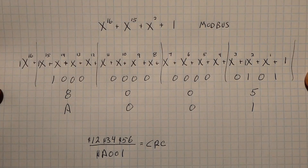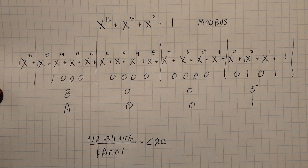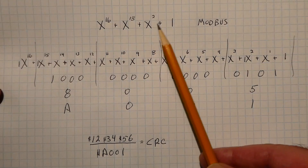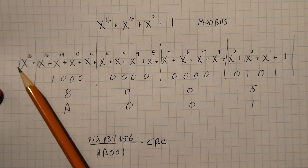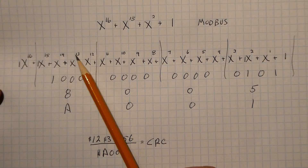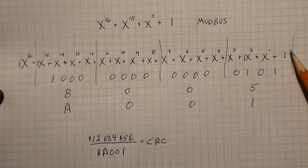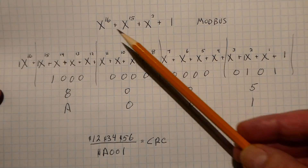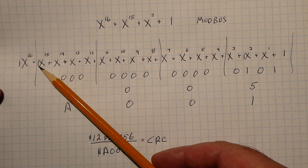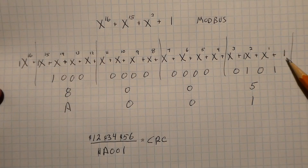I'd like to use the Modbus polynomial for my CRC check. It's a 16-bit CRC and the polynomial is x¹⁶ + x¹⁵ + x² + 1. If we expand it, we list all powers from x¹⁶ down to x⁰. x¹⁶ has a coefficient of 1, x¹⁵ has a coefficient of 1, x² has a coefficient of 1, and x⁰ is 1.